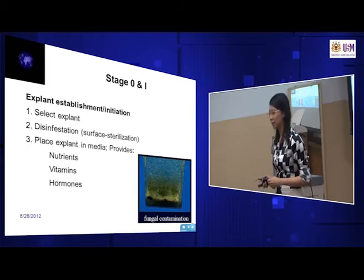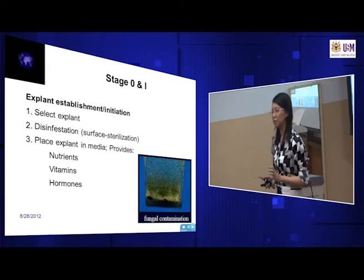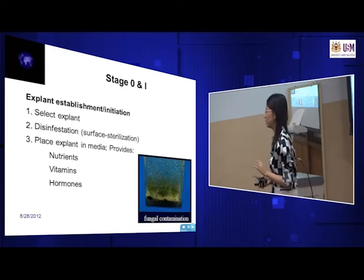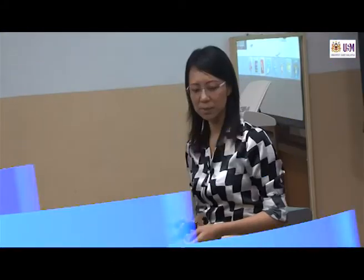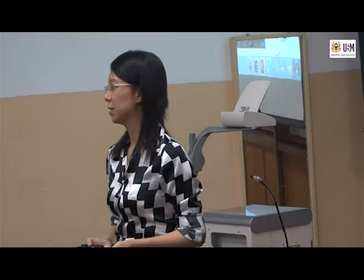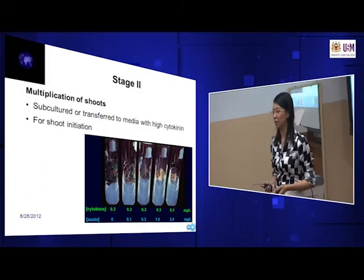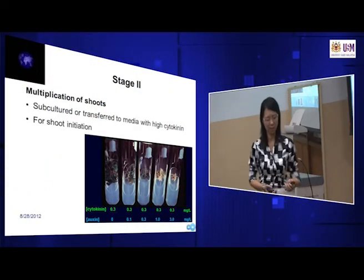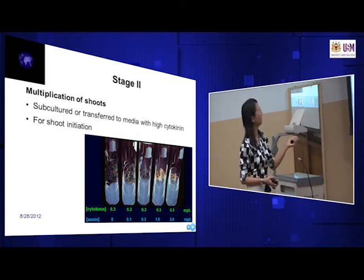We can use radiation as well — whatever measures can disinfect but do not kill the plant. Then of course place in the media with nutrients, hormones, and carbon sources. One of the main carbon sources for initial plant tissue culture is actually sucrose — it's a carbon source. Then multiplication of shoots: if you want shoots to grow first, we use cytokinin hormones.